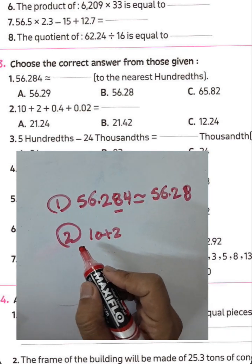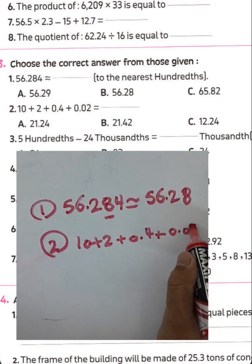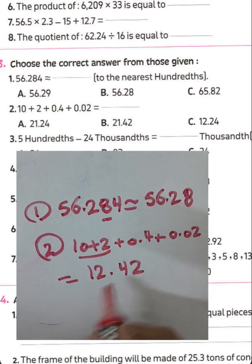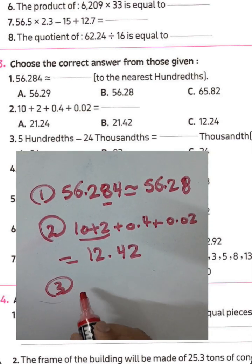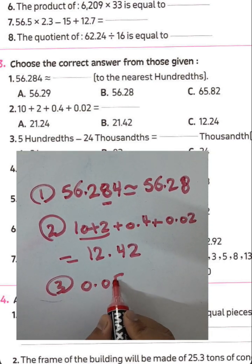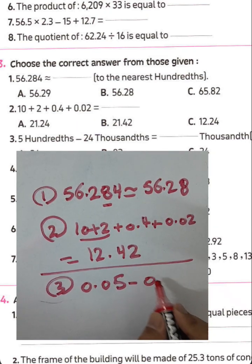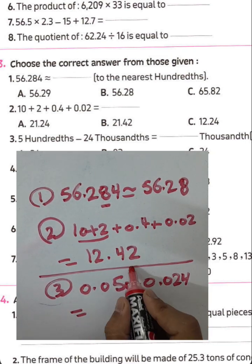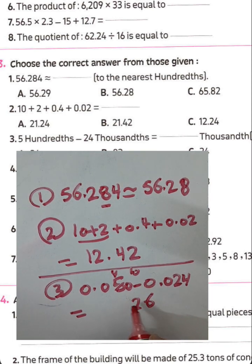10 plus 2 plus 0.4 plus 0.02 equals 12.42. Version number three: 50 hundredths minus 24 thousandths. Borrowing as needed: 10 minus 4 equals 6, 4 minus 2 equals 2, 0 minus 0 equals 0. The result is 0.26 hundredths.